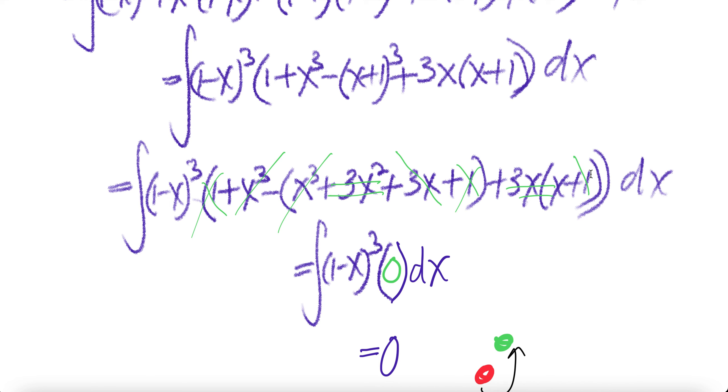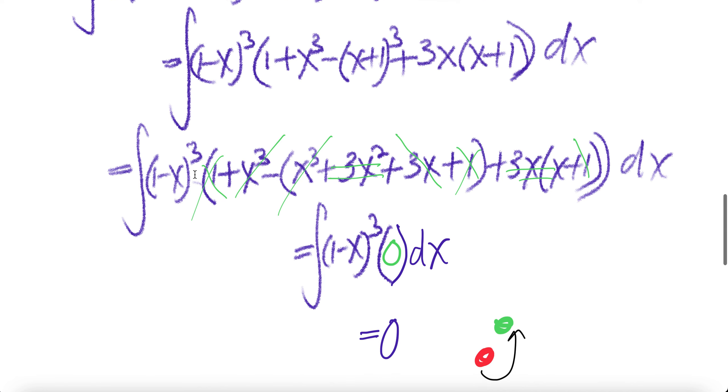Now let us do some cancellation. This one cancels with this one, x³ cancels x³, 3x² cancels with 3x², and then you have that one cancel with that one. So this whole thing gets you zero. Zero times this, you get zero.